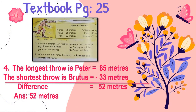Let's do question number 4. The question is: what is the difference between the longest and the shortest throws? You have to find the longest and shortest throws. The longest throw is Peter's at 85 meters and the shortest throw is Brutus's at 33 meters. Subtracting 33 from 85, the answer is 52 meters.